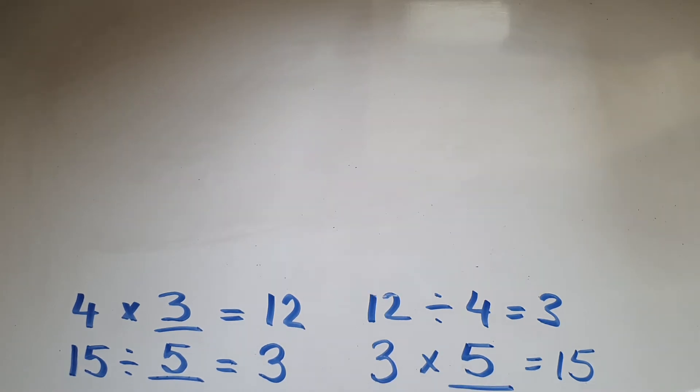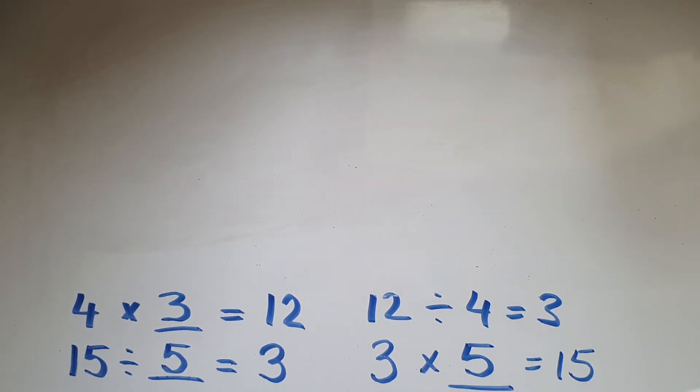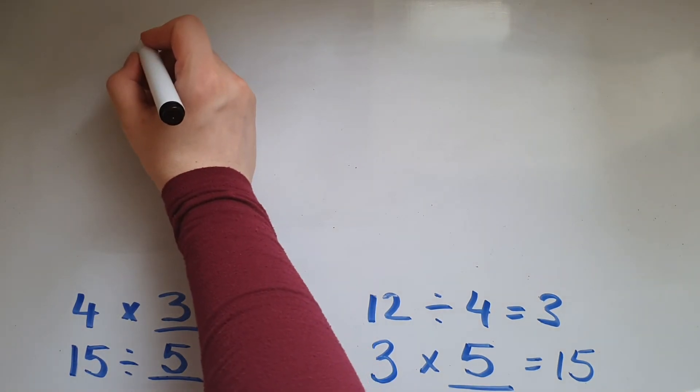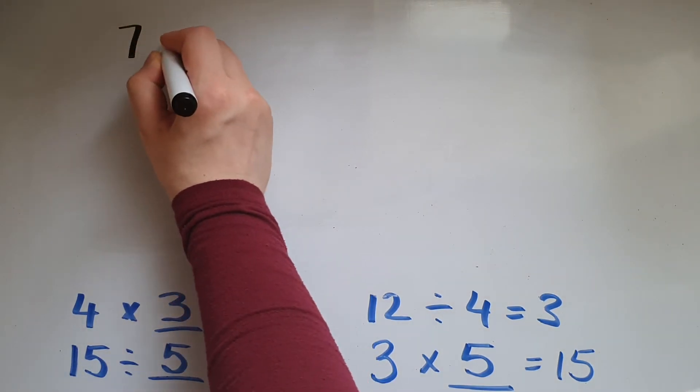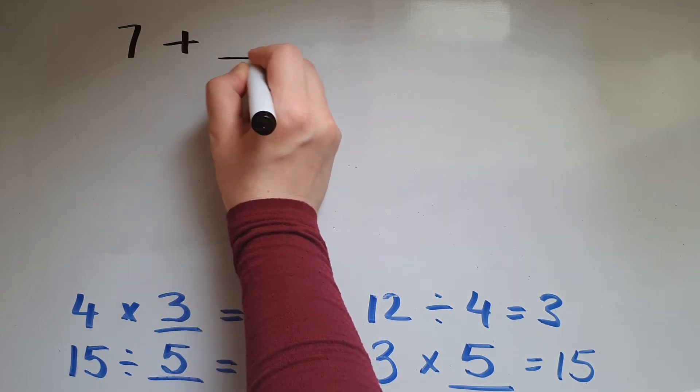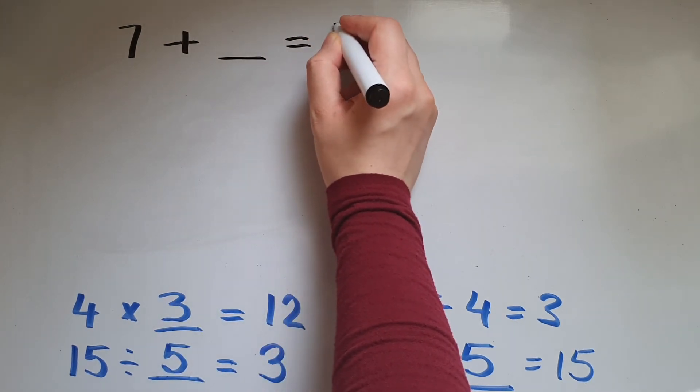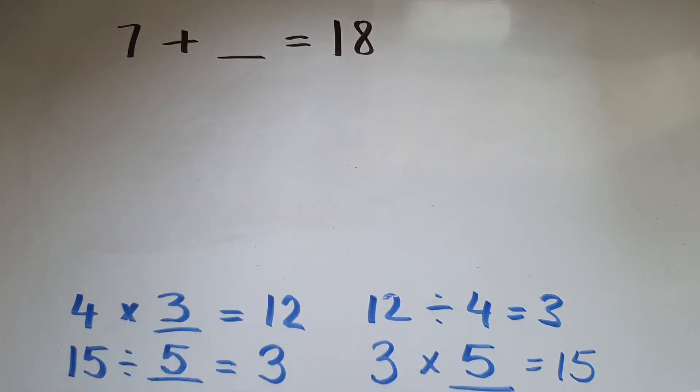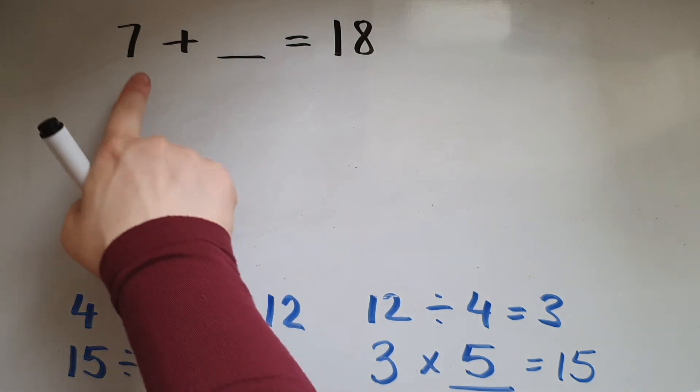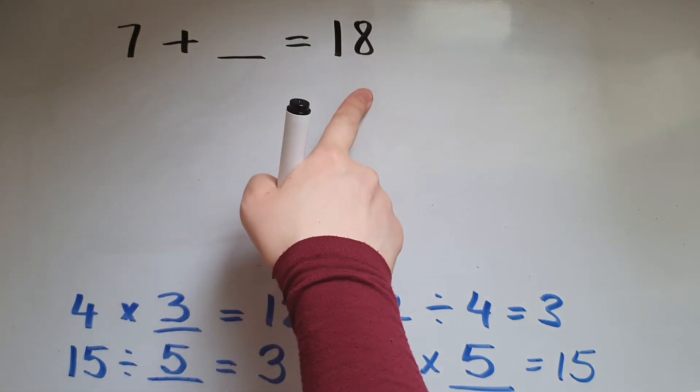It works in the same way with addition and subtraction. So if I do 7 add a number equals 18, so what's that number I add to 7 to give me 18?